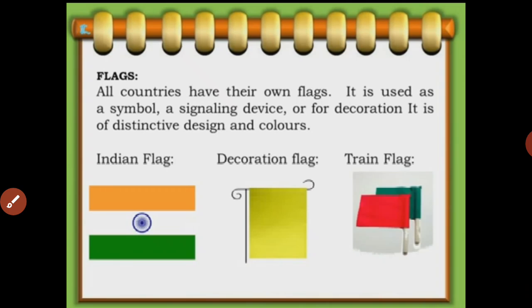The first topic: flags. All countries have their own flags. It is used as a symbol, a signaling device, or for decorating. It is of distinctive designs and colors. The colors and designs have their own significance - it is a symbol. The first one is the Indian flag. The second one is a decoration flag. The third one is a train flag. Already you know our Indian flag.